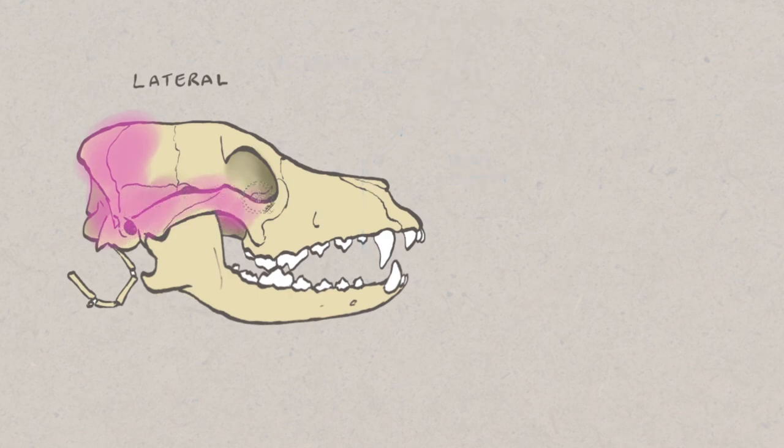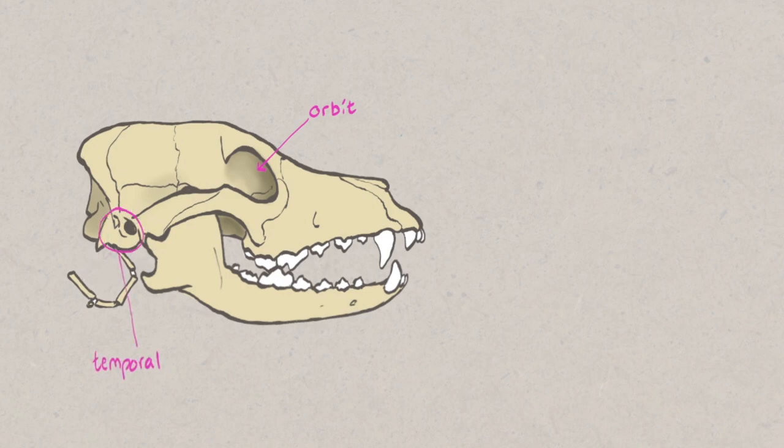The cranium is the caudal part of the skull which houses the brain. As well as protecting the brain, there are also areas for housing special sense organs. The eye is located within the orbit and the inner ear is located within the temporal bone.